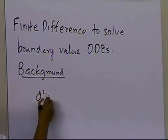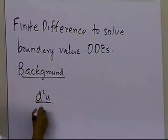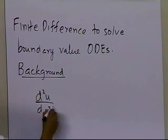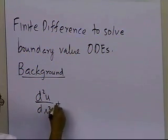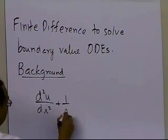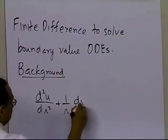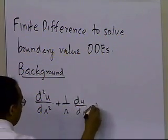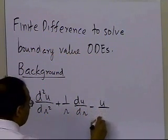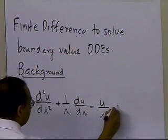Let's suppose somebody gives you a differential equation like this: d²u/dr² plus (1/r)(du/dr) minus u/r² equals 0.